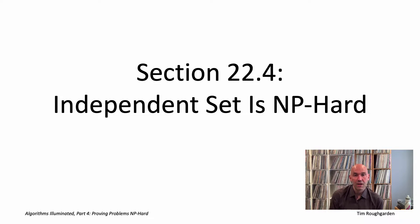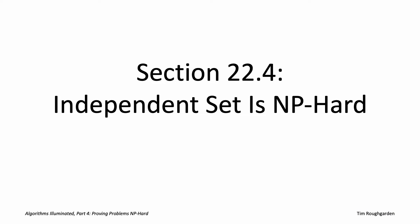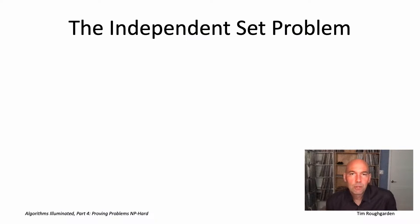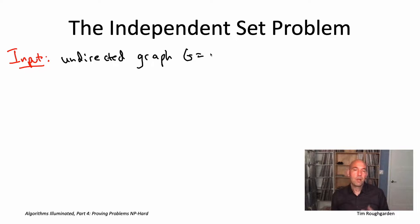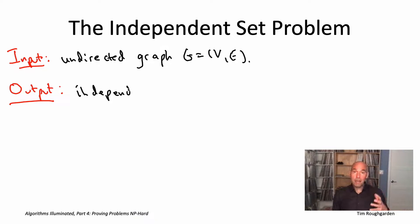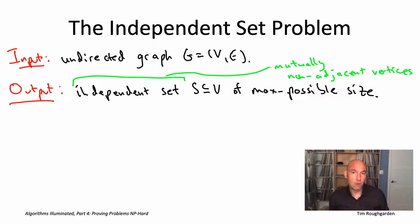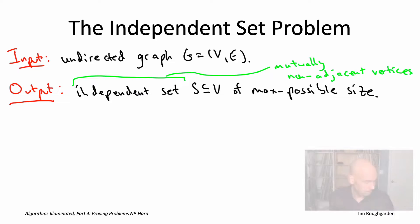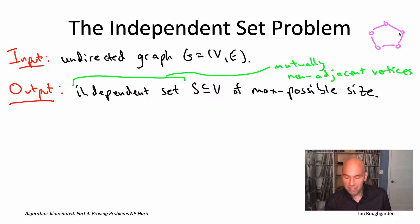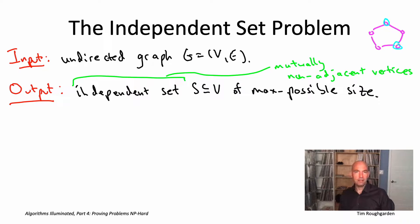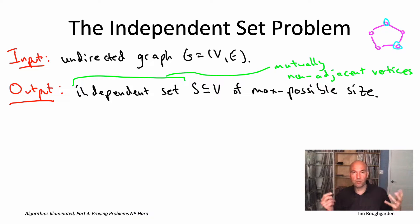Let me quickly jog your memory about what the independent set problem is. The input is an undirected graph and the goal is to compute an independent set — a subset of vertices that are all mutually non-adjacent — of the maximum possible size. For example, if the input graph is a five-cycle, the maximum size of an independent set would be two vertices. There are various pairs of vertices that form independent sets, but any non-adjacent pair qualifies, and if you tried to pick three vertices, two of them would end up adjacent, which is not allowed.